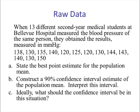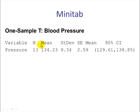Next example. When 13 different second-year medical students at Bellevue Hospital measured the blood pressure of the same person at about the same time, one after the other, they obtained the following results, measured in millimeters of mercury. We are given 13 values and assume they come from a normal population. Part A: what's the best point estimate for the population mean? Part B: construct a 90% confidence interval, interpret it, and consider what ideally the interval should look like. Here's the Minitab printout showing X-bar, S, the standard error, and the confidence interval.